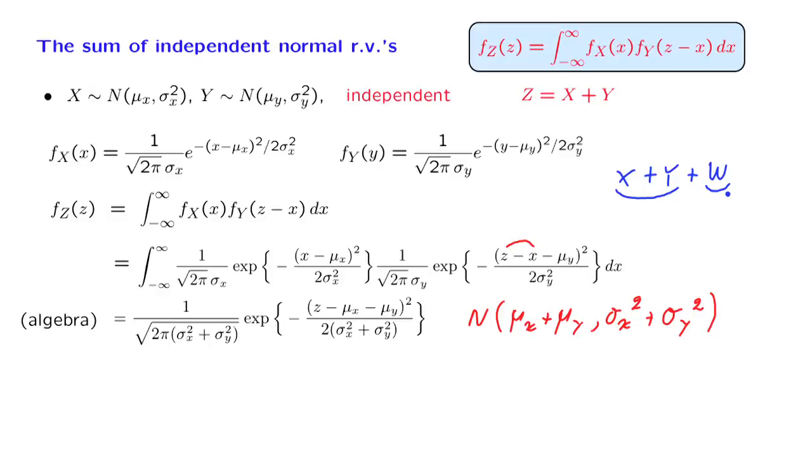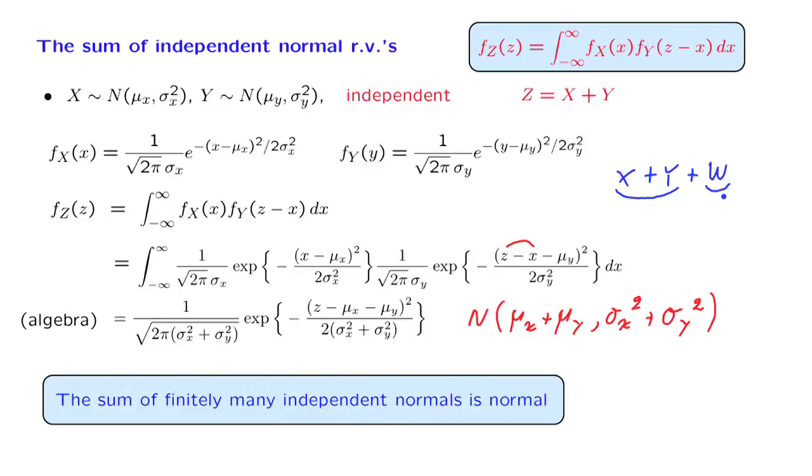And we continue this argument by induction and conclude that, more generally, the sum of any finite number of independent normal random variables is normal. This is a very important but also useful fact. It means that when we start working with normal random variables, very often we stay within the realm of normal random variables. We can form linear functions of them, take linear combinations of them, and still remain in the world of normal random variables.